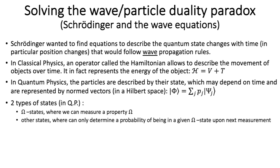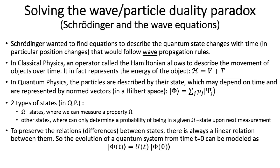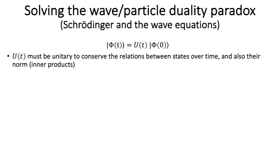And we've also seen that there are two types of states in quantum physics: the omega states, which are states where we can measure property omega, and the other states where we can only determine a probability of being in a given omega state upon next measurement. To preserve the relations, and in particular the differences between states, there is always a linear relation between them. And so, the evolution of a quantum system from time t equals zero can be modeled like this, using this function U of t. And the operator U, function of time, must be unitary. There's a theorem that says that unitary implies invariant for inner products.